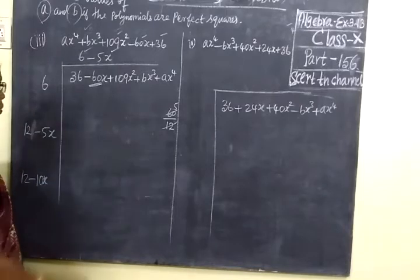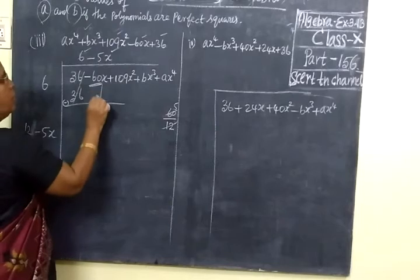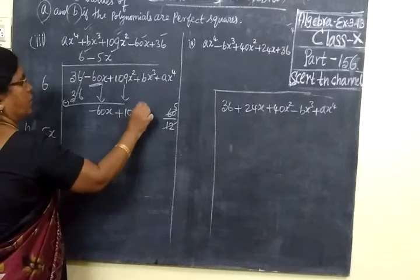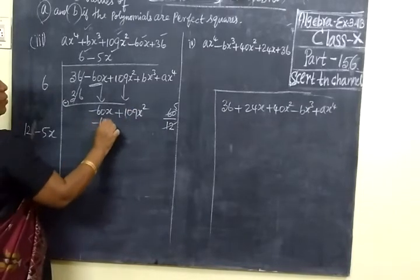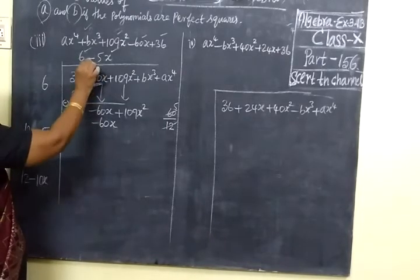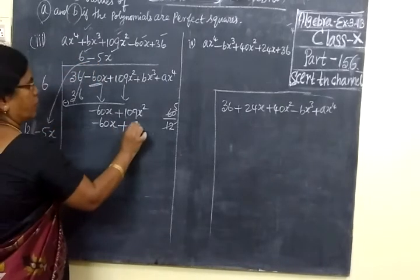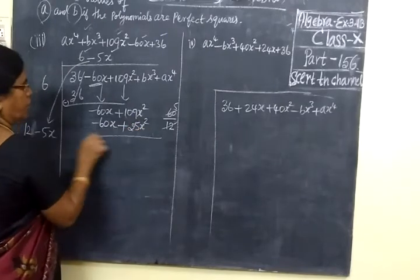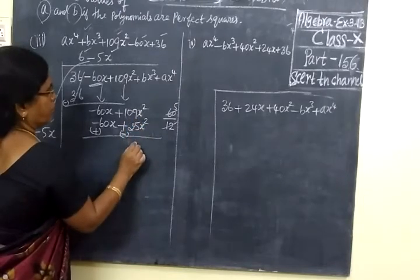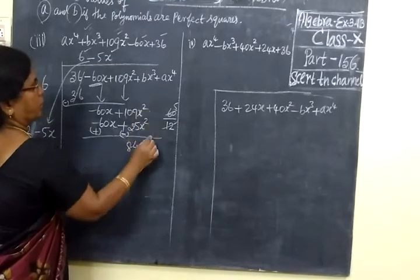Third number we see later. Now first one is 36. Sign change. Cancel. Take the next number. This also you take — be careful with the sign. First number as it is. Second number — you multiply these two. Minus minus plus, 5 into 5 is 25x squared. Sign change, here also minus. So if you subtract it, 9 minus 5 is 4. Then 10 minus 2 is 8x squared.